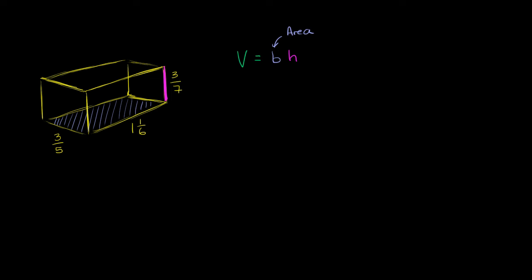Well, what's the area of the base? The area of the base is the same thing as the length times the width. So you might see it written like that. Area of base is going to be your length times your width. Length times width is the same thing as your area of the base.